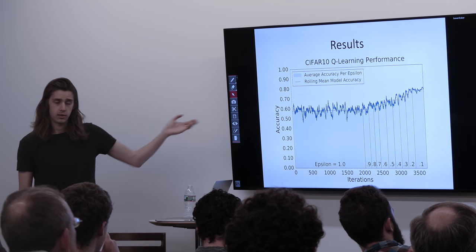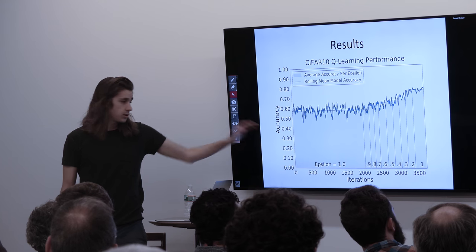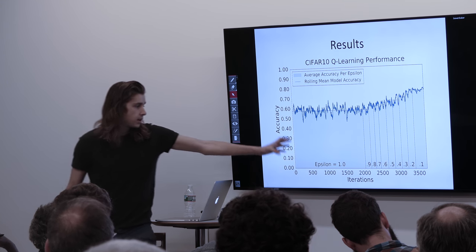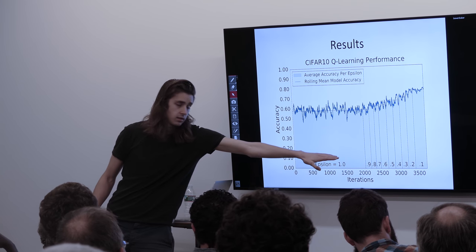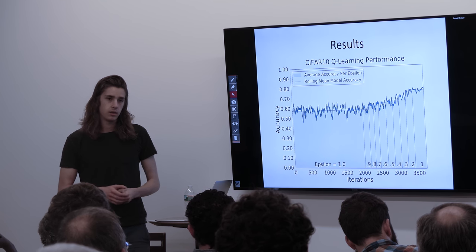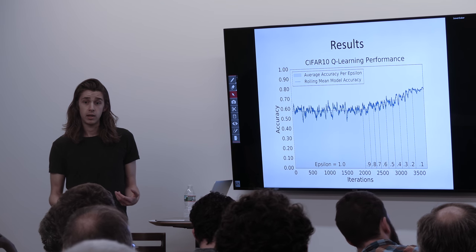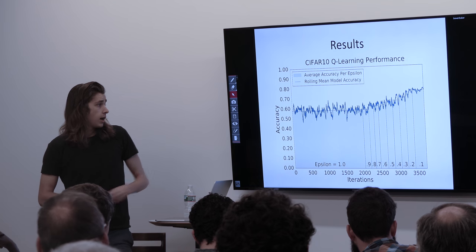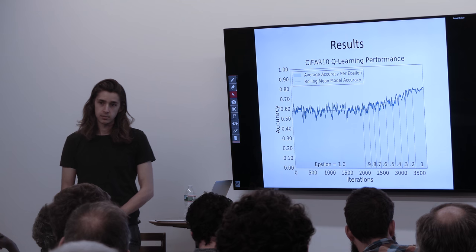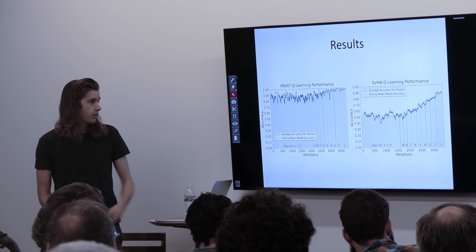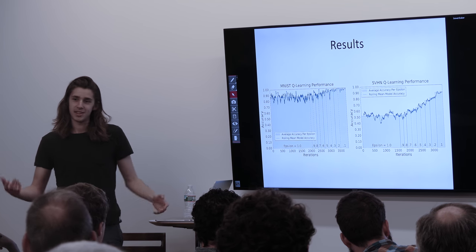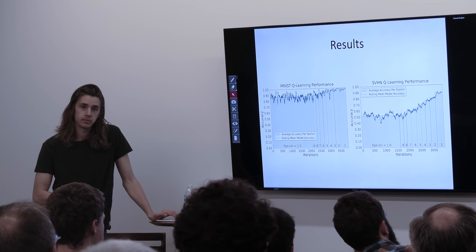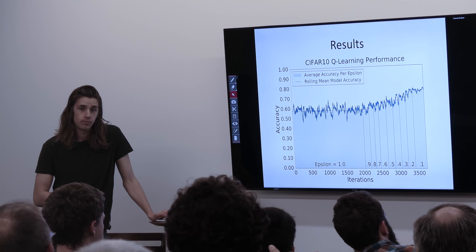Here are results on CIFAR-10. The epsilon schedule goes from 1 down toward zero, where each block represents decreasing epsilon. As you tune epsilon down, average performance goes up — as the agent becomes more greedy, the average performance of the networks it chooses goes up by about 20% over a couple thousand models. On SVHN it learns a lot; on MNIST it doesn't learn as much because most things work on MNIST. The greedy phase doesn't improve until the end because you need enough samples to have learned useful Q-values.